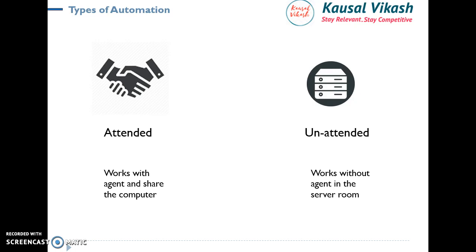Unattended Bots work without an agent and primarily operate in the server room. They don't require any kind of human intervention — they run absolutely within the server room. The bots can be developed and deployed into the server room; they will automatically run, automate the processes, and notify the respective stakeholders. These are the two primary kinds of bots available in the RPA space.